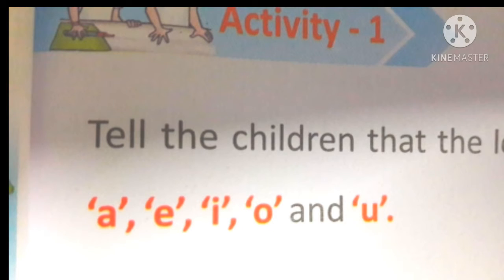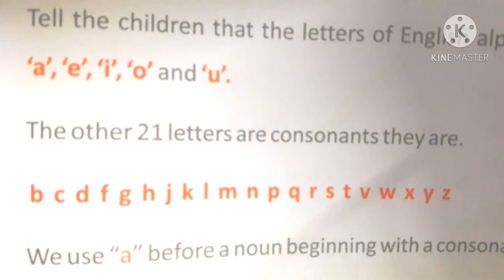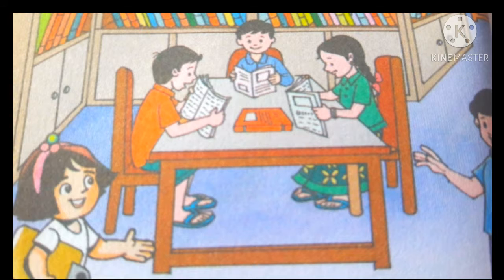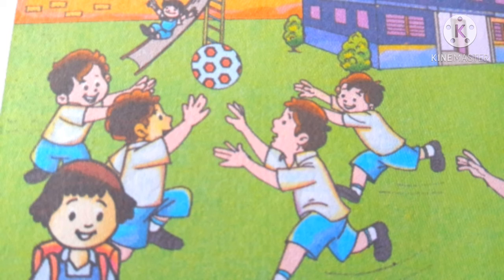The other 21 letters are consonants. They are B, C, D, F, G, H, J, K, L, M, N, P, Q, R, S, T, V, W, X, Y, Z.